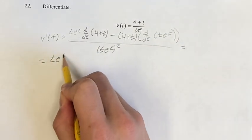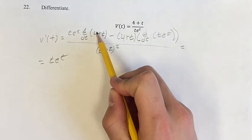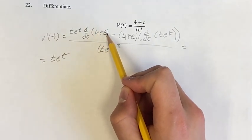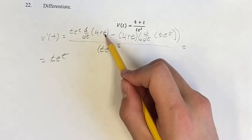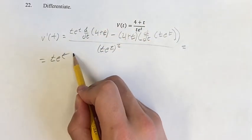So firstly, we have to calculate these derivatives. The derivative of 4 is 0, plus the derivative of t is a linear term, so its derivative is just its coefficient, which is 1. So we have 0 plus 1 is 1,